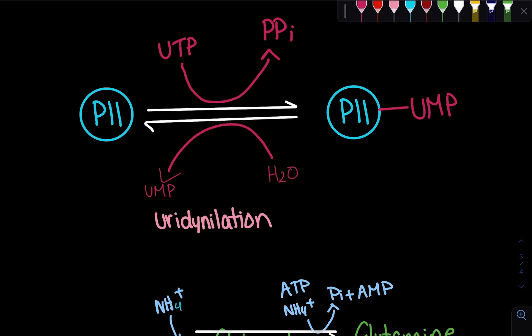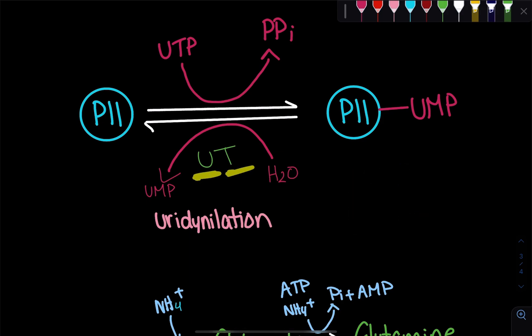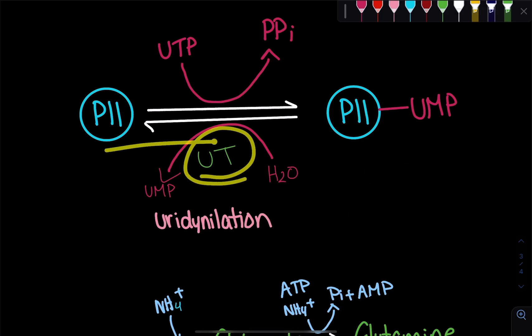This uridylylation reaction is carried out by an enzyme called UT — uridylyl transferase. Just as we had AT (adenyl transferase), UT is uridylyl transferase, and it carries out this reaction on P2.